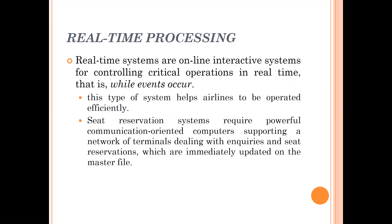The next type of processing is real-time processing. Real-time systems are online interactive systems for controlling critical operations in real-time — that is, while events occur. This type of system helps airlines to be operated efficiently. Seat reservation systems require powerful communication-oriented computers supporting a network of terminals dealing with enquiries and seat reservations, which are immediately updated in the master file.